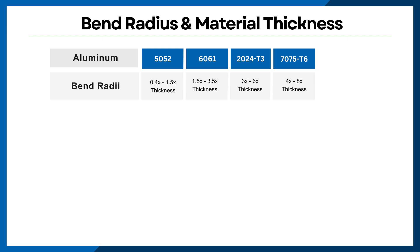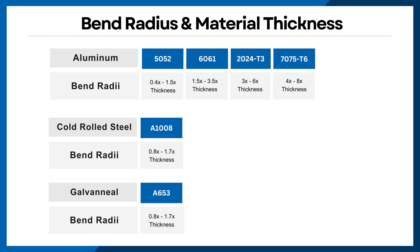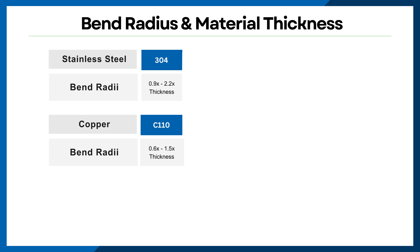For aluminum 7075-T6, it's best to keep it between 4 to 8 times the thickness. When working with cold rolled steel and galvanil, aim to keep the bend radii between 0.8 and 1.7 times the material thickness. For 304 stainless steel, you're looking at a bend radius of about 0.9 to 2.2 times the thickness, and for C110 copper, try to stick within 0.6 to 1.5 times the thickness.